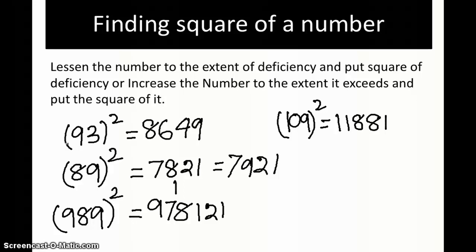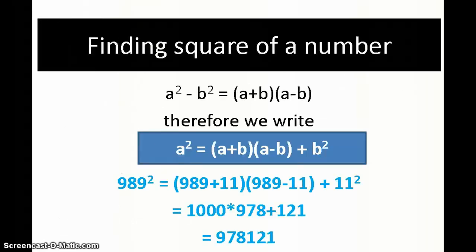Let's now find out the trick behind it and how it works. It's the same simple trick. We know a² - b² equals (a+b)(a-b). Therefore we can write a² equals (a+b)(a-b) + b². The same principle we are applying.